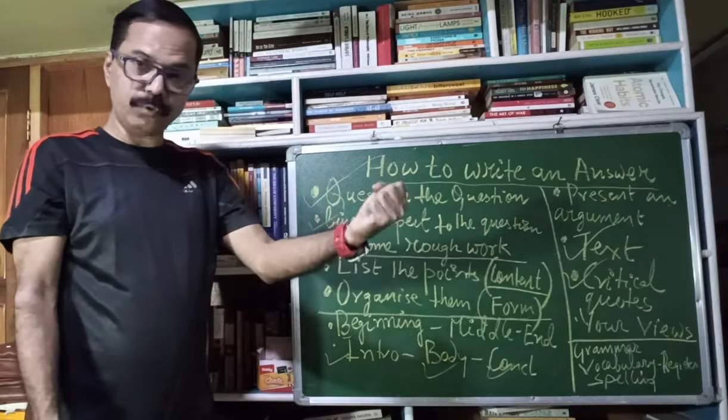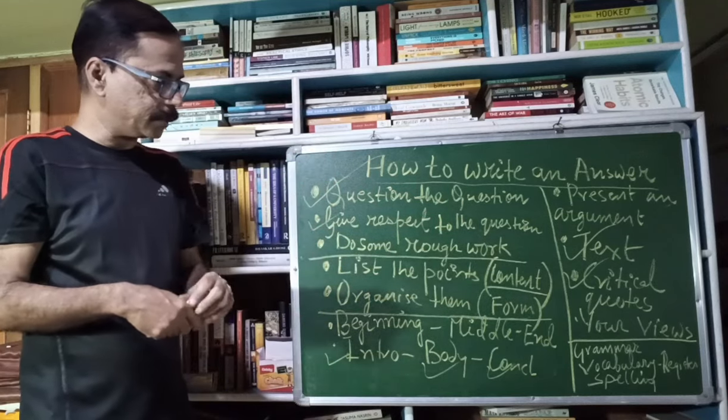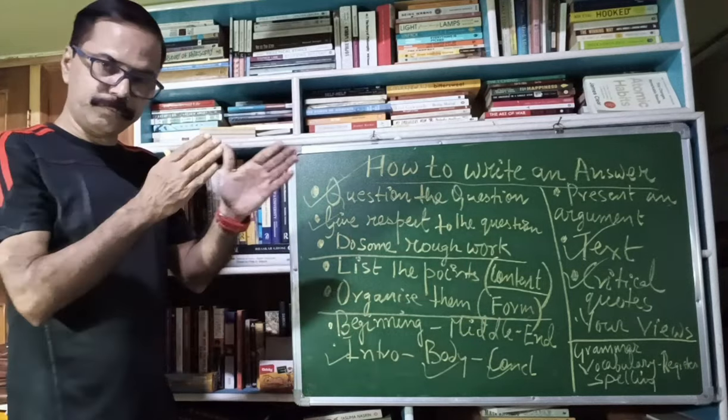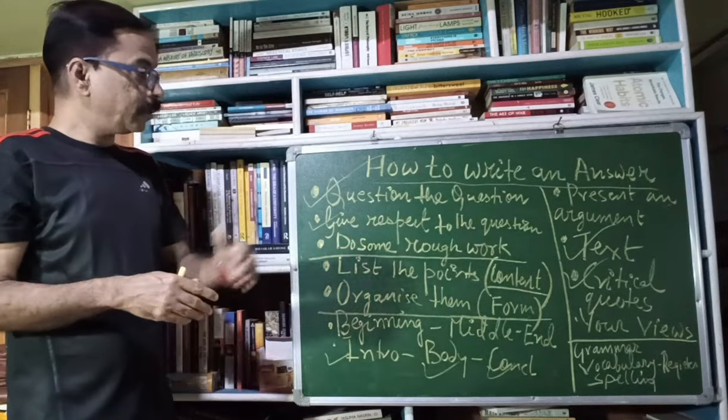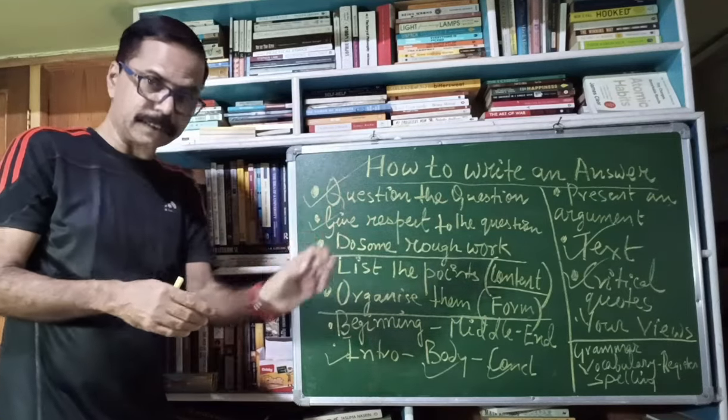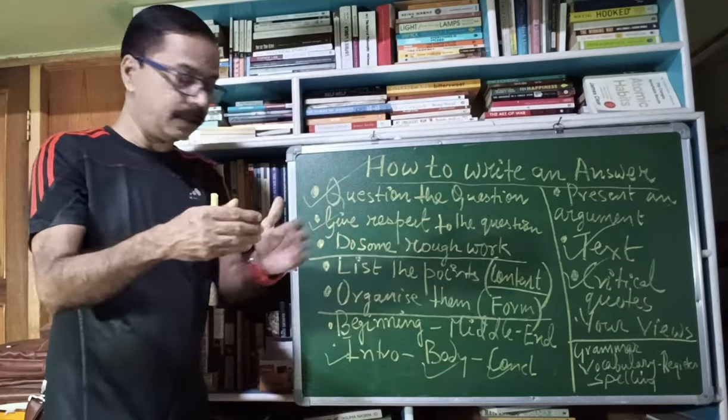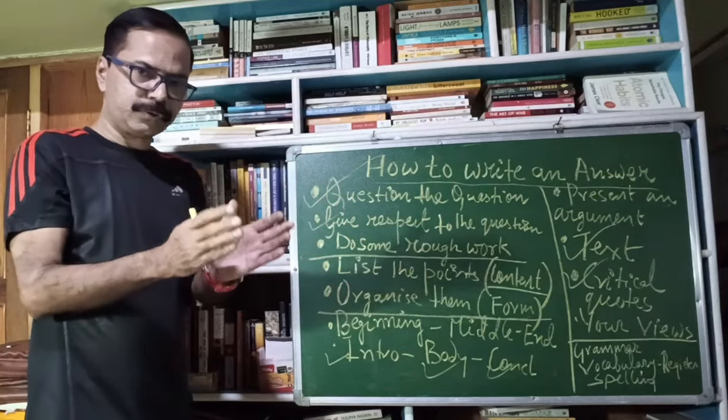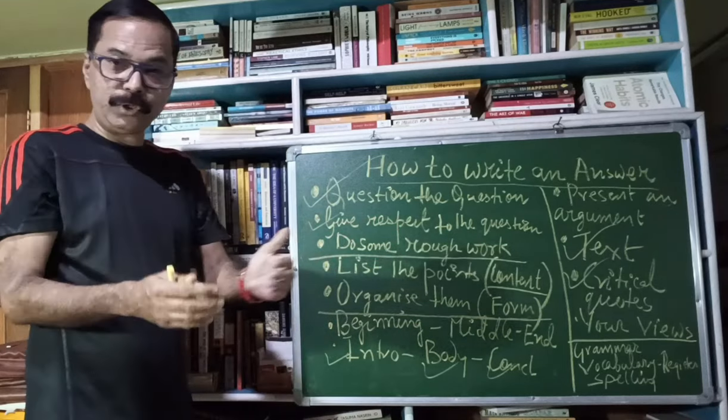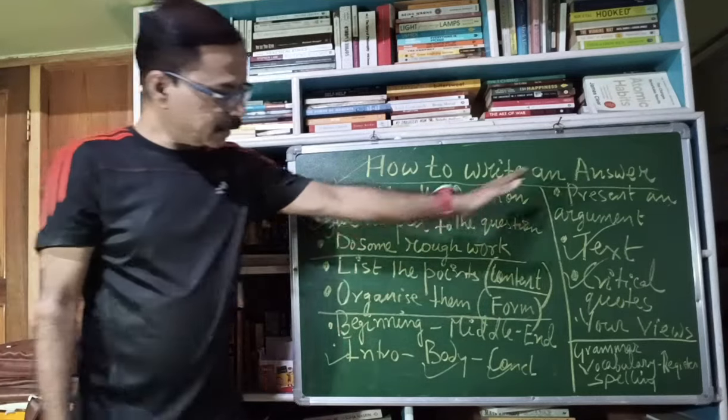So certain important critics, their quotes you need to use in your answers cleverly at appropriate positions. Then you should give your own views, then divide the answer into beginning, middle and end. At the beginning, give some time, give some respect to the question, reflect on it, make a list. You can make a listing paragraph of the points you are using before you actually write. So that is the rough work. Doing rough work in the exams is not the monopoly of mathematics students, mind you. Even you can do your rough work. So this is what you need to follow.